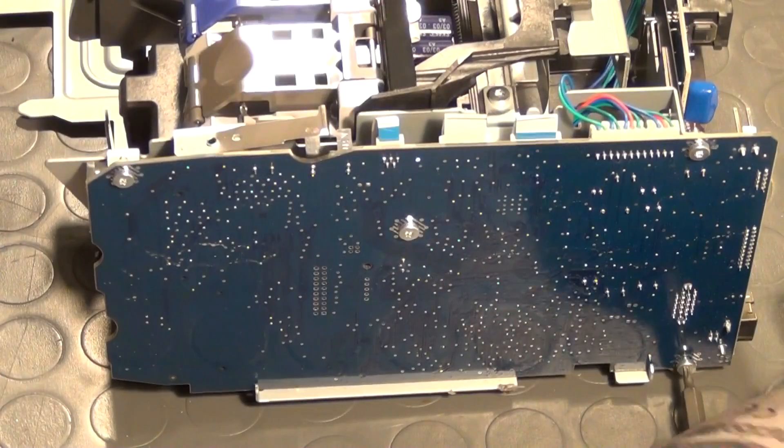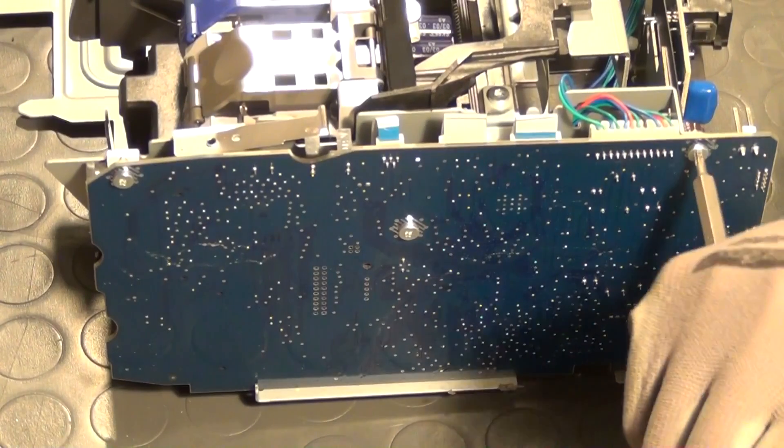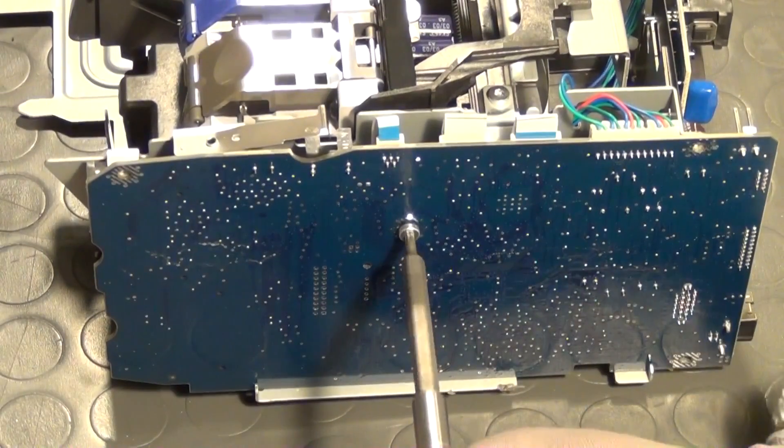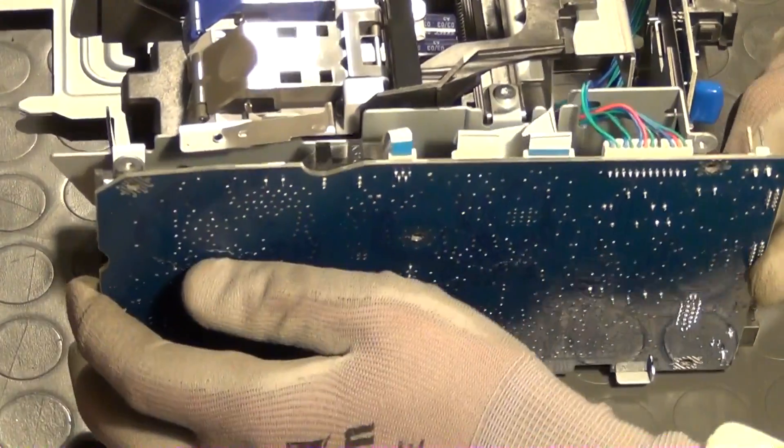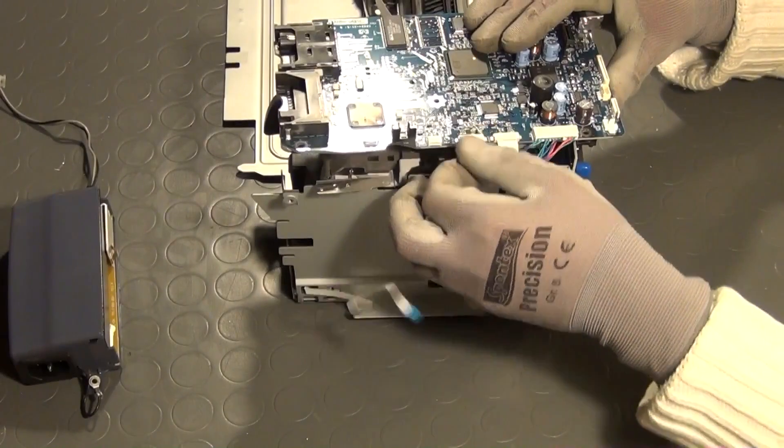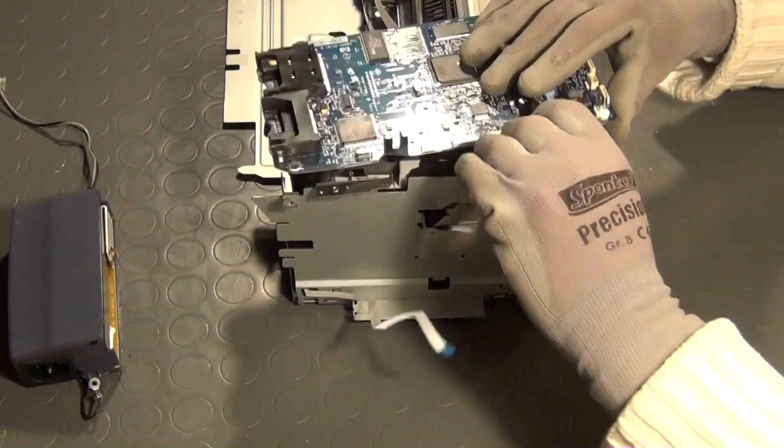Next I have to remove lots of Torx screws again. This time to get loose the printer's main board, which basically controls the device. It is of high quality build but holds mostly highly specialized components that can hardly be reused. Nonetheless, we will take a look at it in part 2.